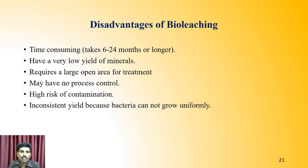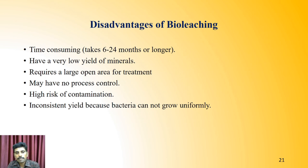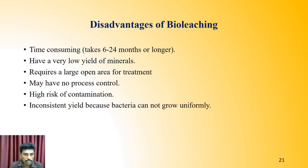The disadvantages of bio leaching are: it is time-consuming, taking six to twenty-four months or longer; it produces a very low yield of minerals; it requires a large open area for treatment; it may have no process control; there is a high risk of contamination because Thiobacillus is used in open areas, which could collapse the bio leaching process; and the yield is inconsistent because bacteria cannot grow uniformly — some grow rapidly, some vigorously, and some slowly.